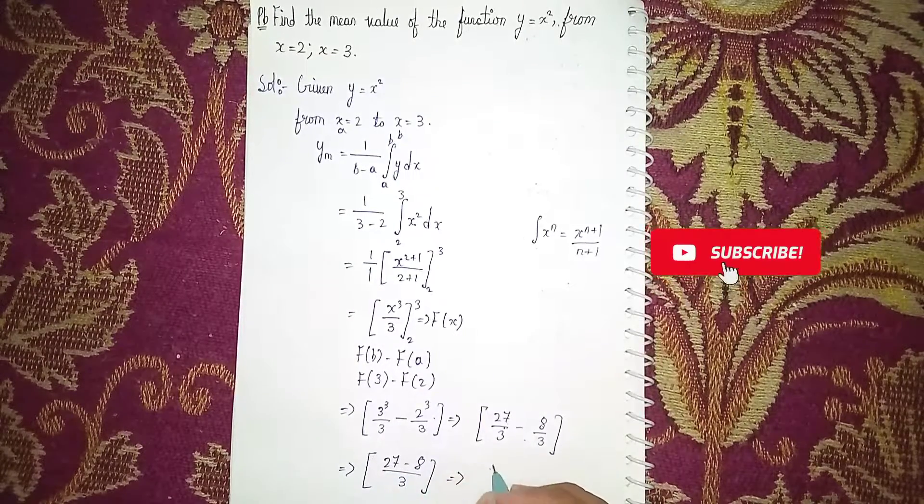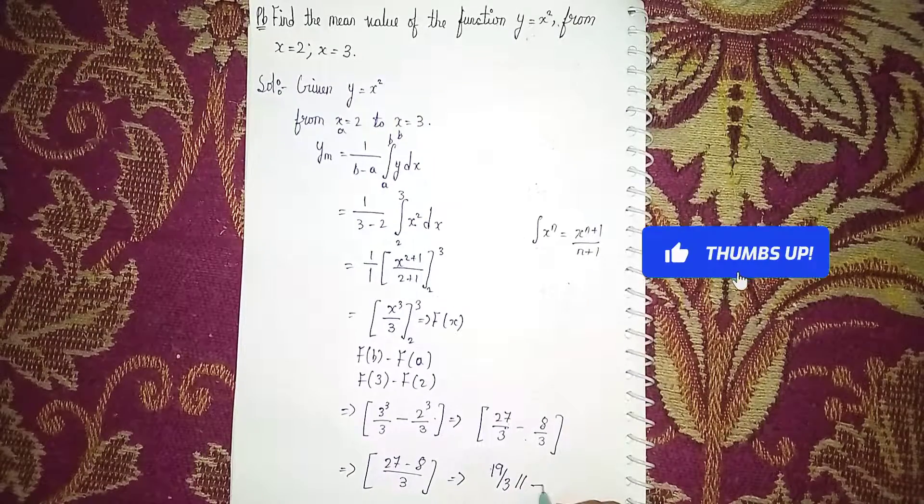Our answer is 27 - 8 = 19, so 19/3. This is our answer. Thanks for watching.